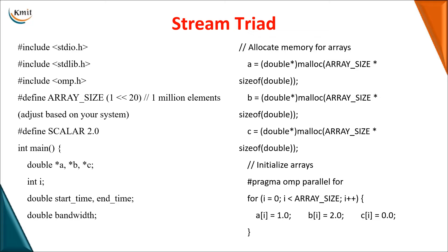Here we are declaring an array size using a left shift operator — the value 1 is shifted 20 times, giving roughly 1 million elements. So you are defining the array size of about 1 million elements, as parallel computing is typically used for large-scale operations like graphical or image processing.